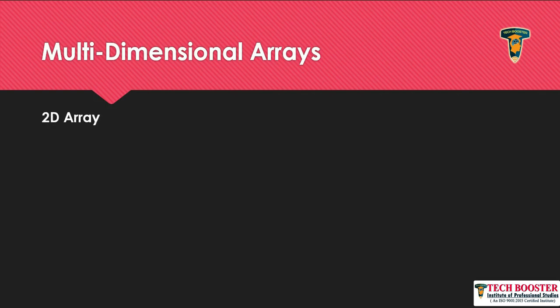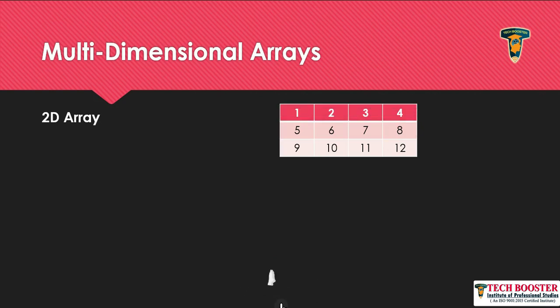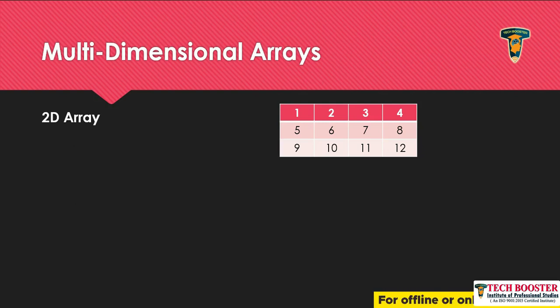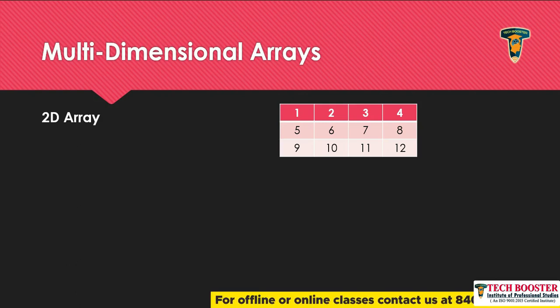So this is our 2D array. Whenever we talk about a 2D array, you will be having multiple rows and multiple columns. Here in this example I am having three rows and four columns. So this is an example of a 2D array. In this video we will learn how to create this 2D array and how to work with it.